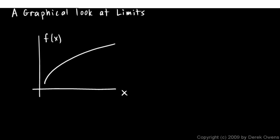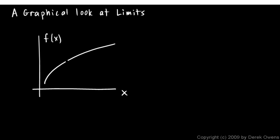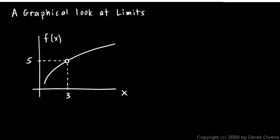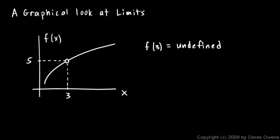Suppose we have some function, and suppose this function is undefined at some particular point. So suppose there's a place here where there's a hole in the graph, and let's suppose that this is at an x value of 3, and this point — or rather lack of point — is at a y value of 5. So this function has a hole in the graph at the point (3, 5). Well, the value of the function at 3 doesn't exist — f(3) is undefined.